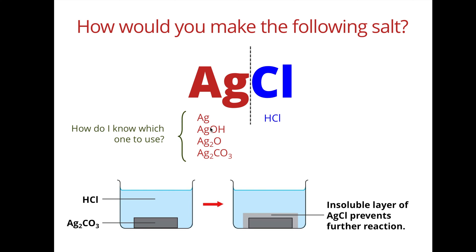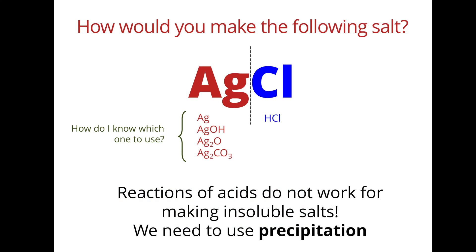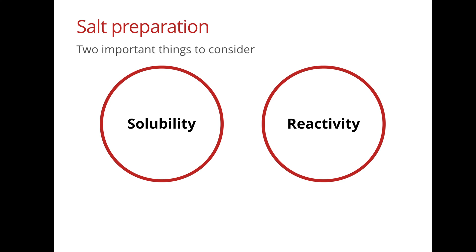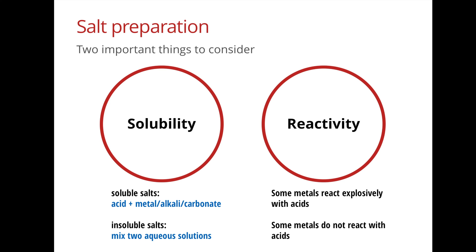So if all these sources are insoluble and silver does not react, what can we do? For insoluble salts we need to use a different method called precipitation. The key lesson from these examples boils down to two things: number one, whether the salt is soluble or not; and number two, whether the starting materials are too reactive (like sodium) or too unreactive (like copper). For soluble salts we generally mix an acid with something else; for insoluble salts we use precipitation, mixing two aqueous solutions.